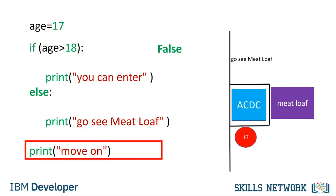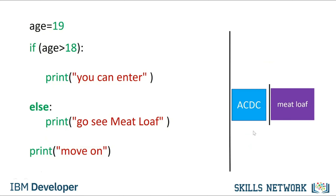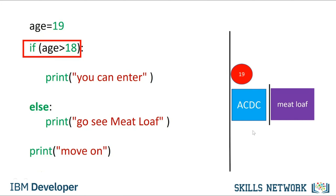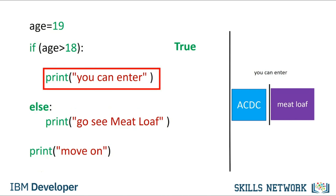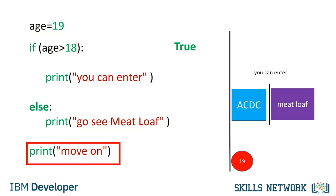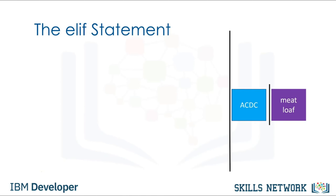The program will then continue running. For the case where age is 19, the if statement is true, so the program executes the statement to print 'you will enter'. The program skips the else statement and continues. The ELIF statement, short for else if, allows us to check additional conditions if the preceding condition is false. If the condition is true, the alternate expressions will be run. Consider the concert example: if the individual is 18, they will go to the Pink Floyd concert instead of ACDC or meatloaf.